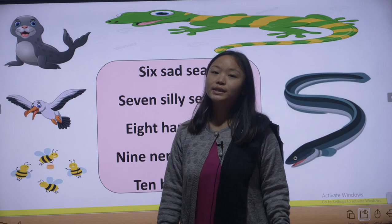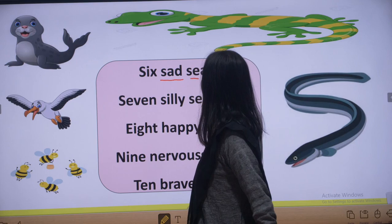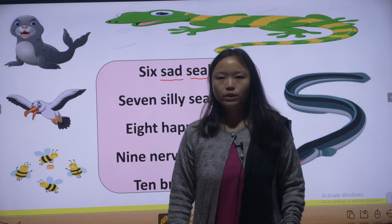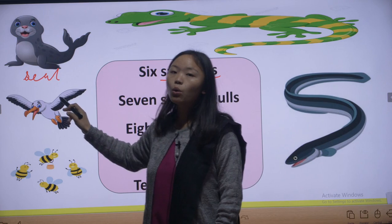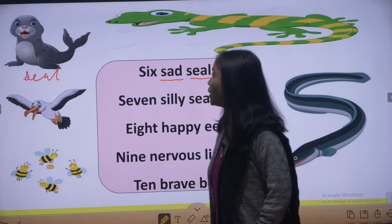Six sad seals — the seals are sad. What is a seal? Seals are water animals. It looks like this — this is a seal, found in the water only.